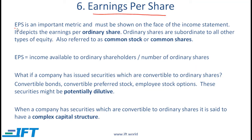Earnings per share or EPS is an important metric and must be shown on the face of the income statement. It depicts the earnings per ordinary share. Ordinary shares are subordinate to all other types of equity. You might hear the term preferred shares or preference shares, which get dividends before ordinary shares. Ordinary shares are also called common shares or common stock.